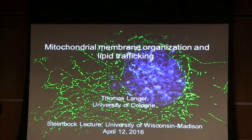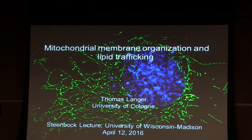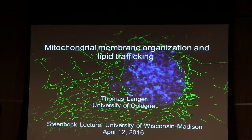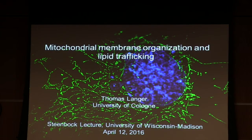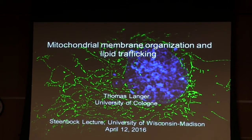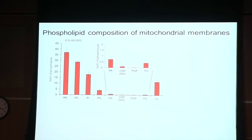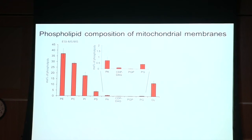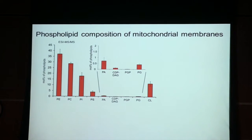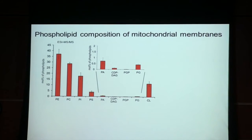I would like to start out with a very general question: how do cell membranes maintain their lipid composition? This is actually something that is really poorly understood broadly, but it's also very important to understand because a defined lipid composition is important for the function of any cellular membrane and the proteins that reside in it. This is also true for the mitochondrial membrane — here is a lipidomics analysis of mitochondrial membranes in yeast.